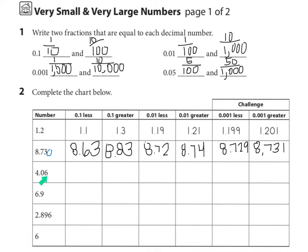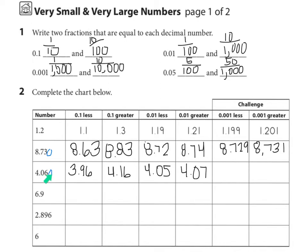Looking at the next one: four and six hundredths. One tenth less — here we see zero in the tenths, so one tenth less would be nine, but we need to borrow from the ones place, so the ones becomes a three. That's a little trickier: three and ninety-six hundredths. One tenth greater: four and sixteen hundredths. One hundredth less: four and five hundredths. One hundredth greater: four and seven hundredths. For thousandths, add a zero: we see sixty thousandths. One thousandths less is fifty-nine thousandths — four and fifty-nine thousandths. One thousandths greater: four and sixty-one thousandths.